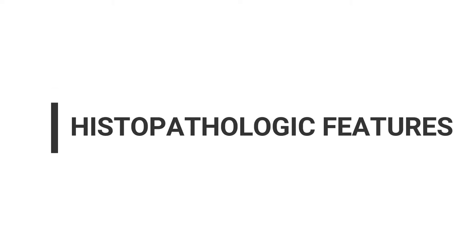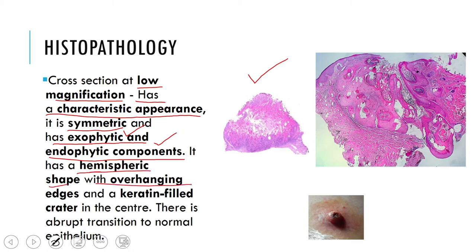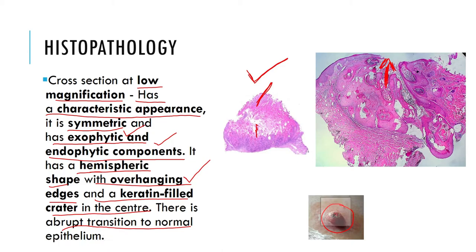Now let us see the histopathology of keratoacanthoma. At low magnification in cross section it has a characteristic appearance — it is symmetric and has an exo- and endophytic component. Exo means growing outwards from the surface epithelium; endo means growing inwards pushing below. It has a hemispheric shape with overhanging edges and a keratin-filled crater in the center, with an abrupt transition to normal epithelium. The keratin filling the crater is visible under the microscope.